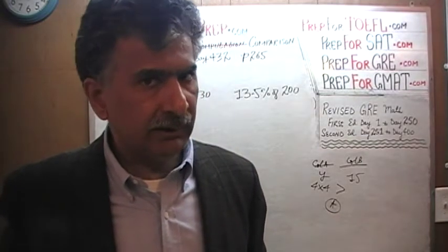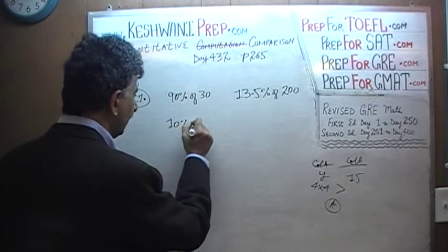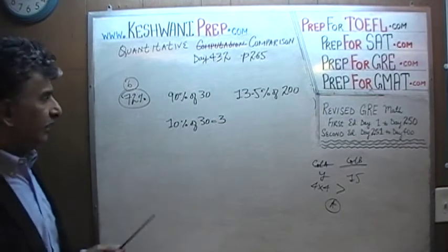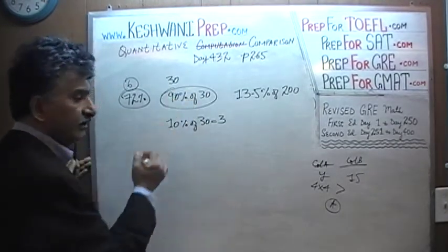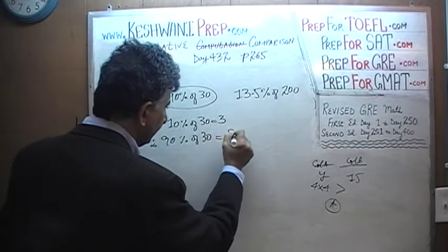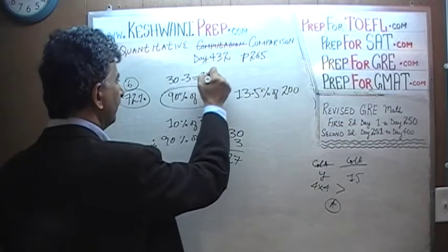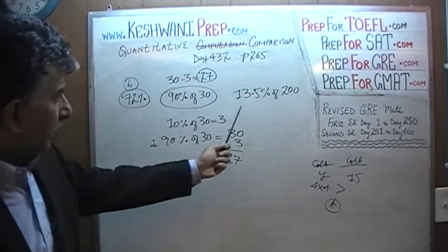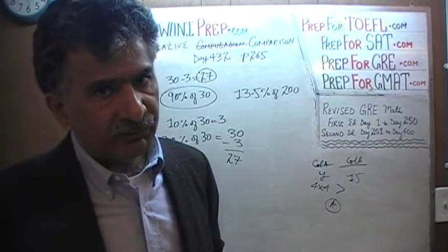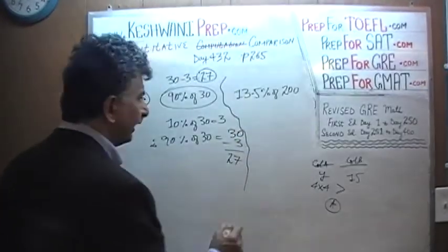For 90% of 30: we know 10% of 30 is 3, so 90% of 30 is 30 minus 3, which is 27. For 13.5% of 200, use a smarter approach rather than grinding it out mechanically. Ask yourself: how much is 13.5% of 100?